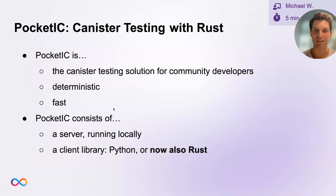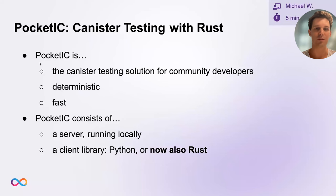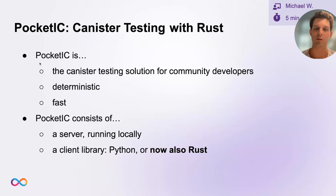Hi everyone. I'm Michael from the Testing and Verification team. The news I'm here to spread is that we have released a Rust library for Pocket IC. So what is Pocket IC? It is a canister testing solution for the Internet Computer which is fast and deterministic. A few weeks ago we released the first version of Pocket IC together with a Python library, and we have now followed up with a Rust library.